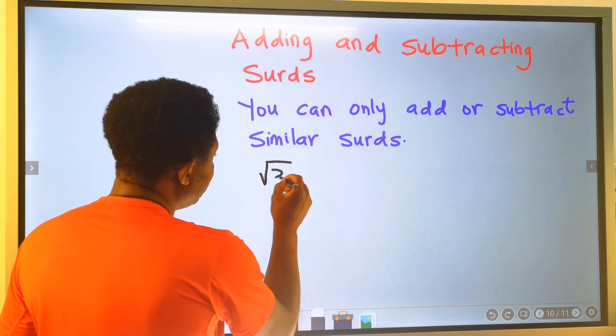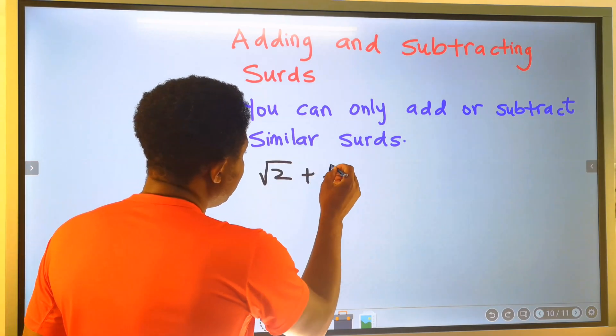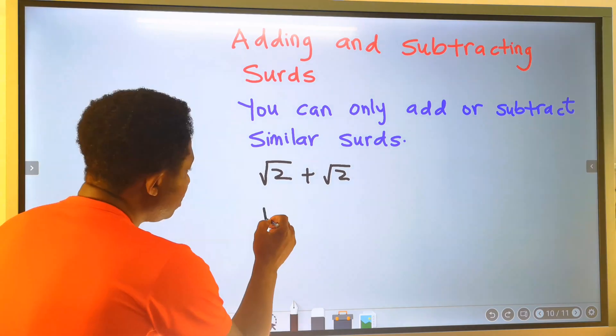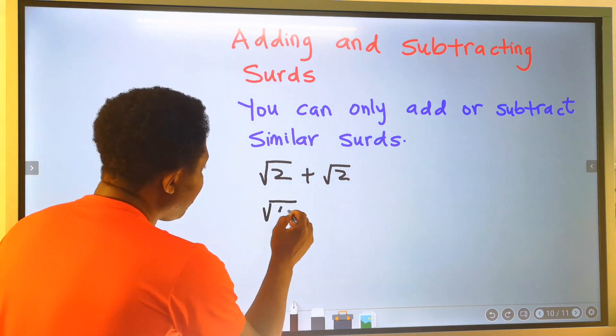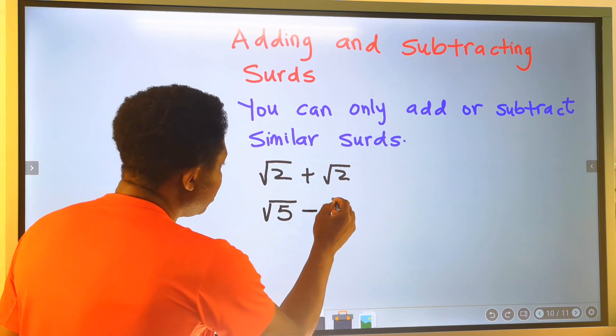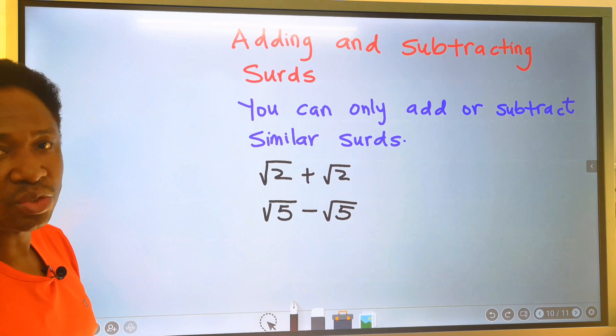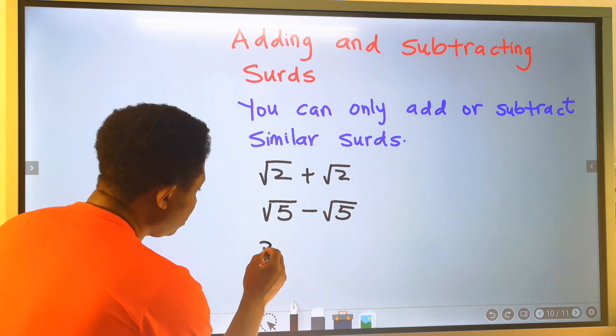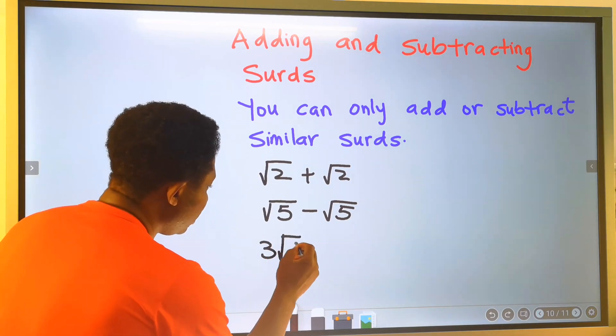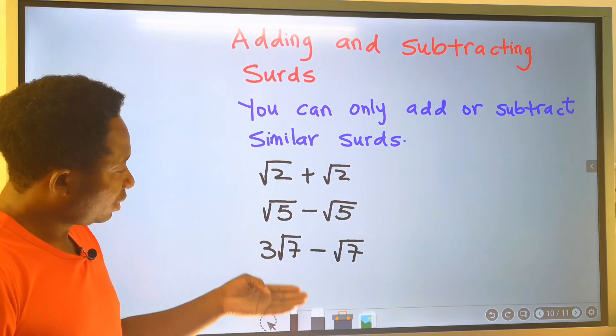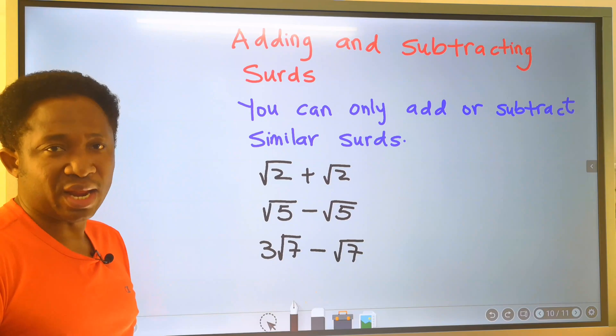For example, the square root of 2 plus the square root of 2. This is allowed. The square root of 5 minus the square root of 5. This is also allowed. 3 root 7 minus root 7. This is also allowed.